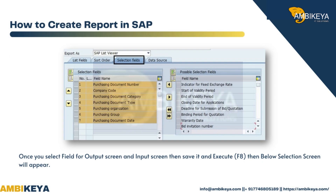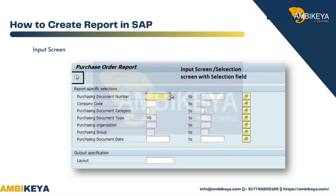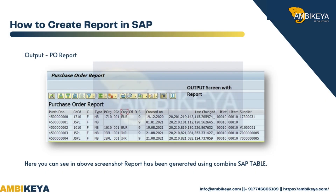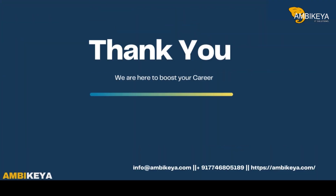Once you select fields for the output screen and input screen, save it and execute using F8. The selection screen will appear as the input screen. Here you can see in the above screenshot that the PO report has been generated using combined SAP tables. Thank you.